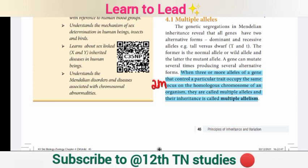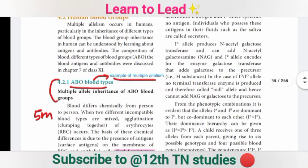The important one is highlighted in blue color — two more questions. Let's start with those two questions. On the next page, ABO blood types is an important one-mark question. Let's start with ABO blood types. How can you explain this? Explain multiple allelism with an example.